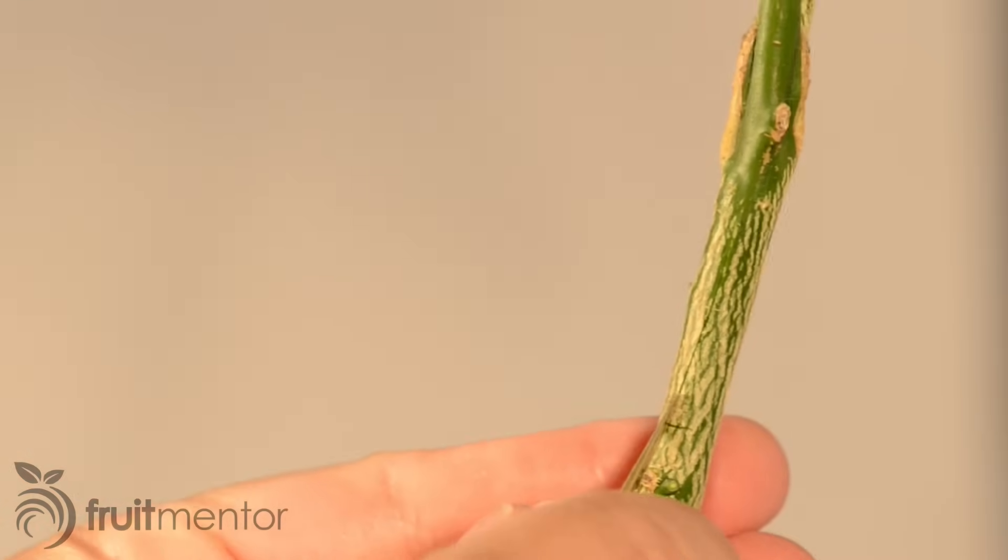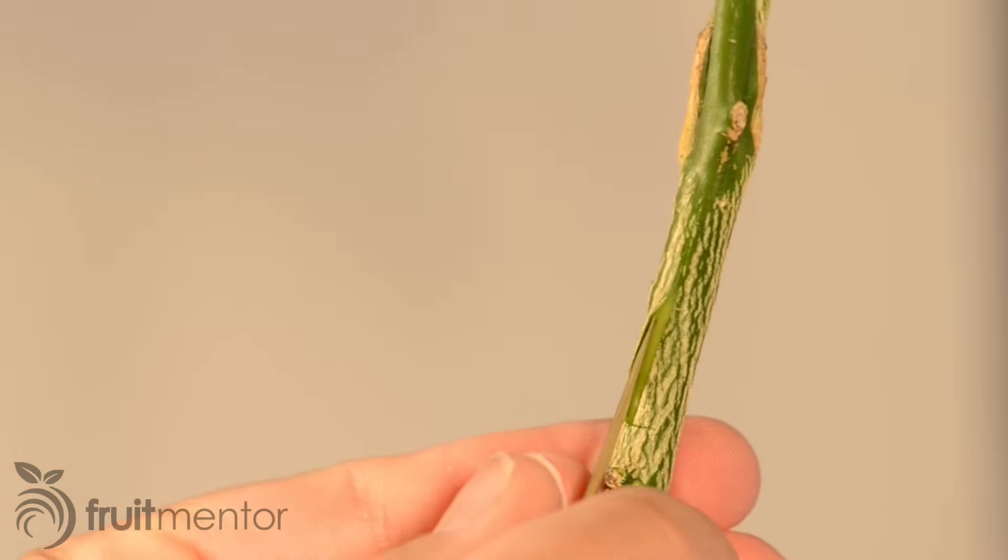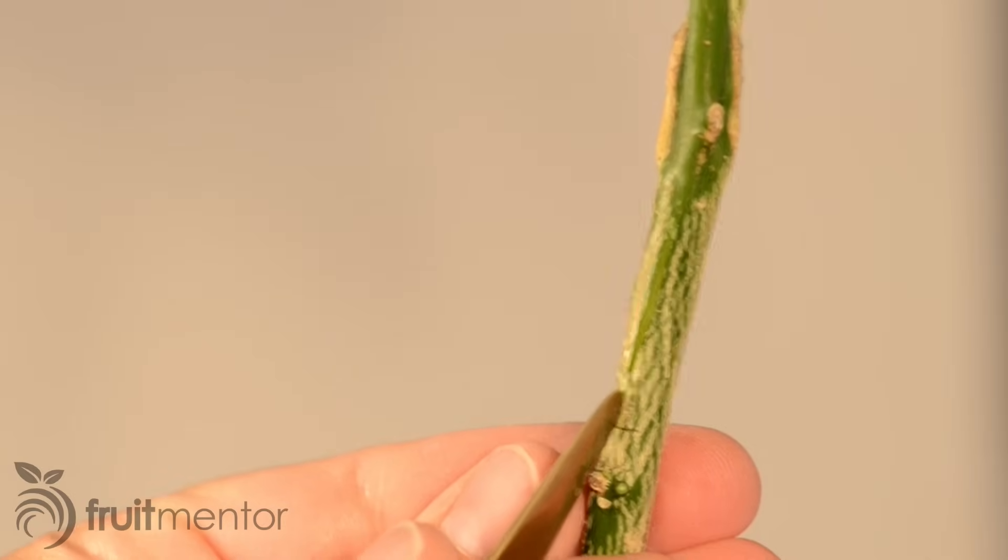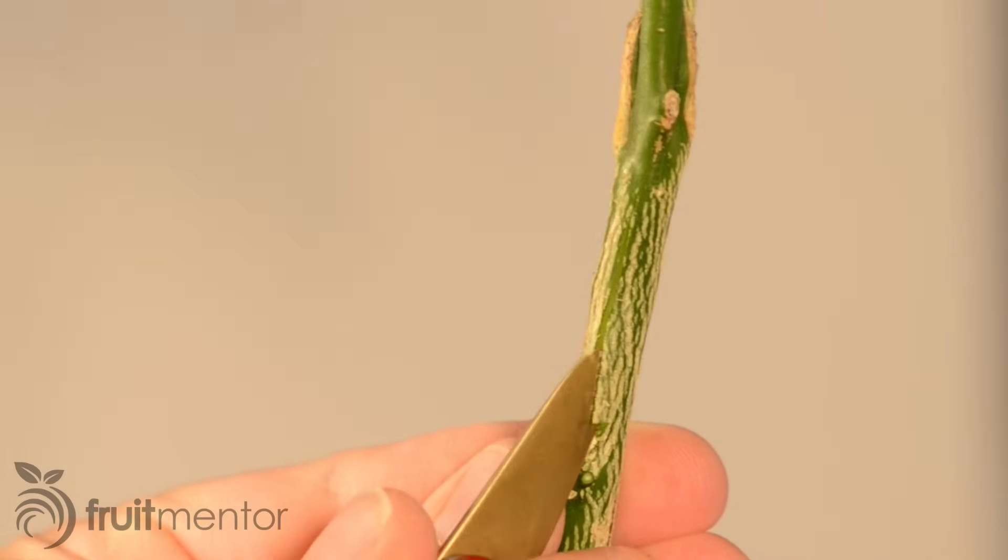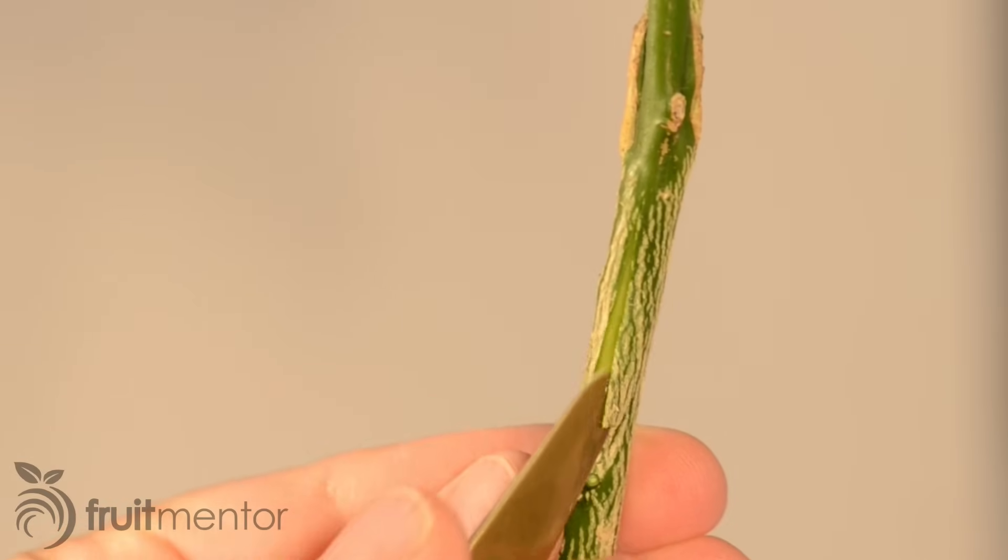Next, I peel the bark back with the bark lifter on my grafting knife to prepare the rootstock to receive the bud. T-budding must be performed during a time of year when the tree is actively growing, allowing the bark to be peeled back.